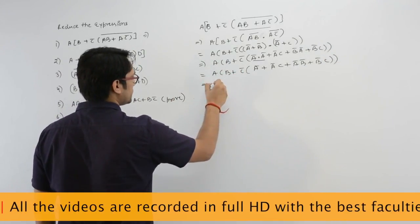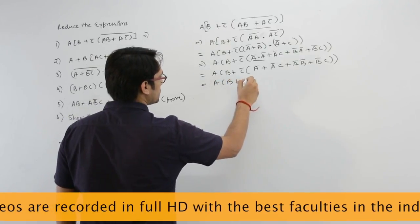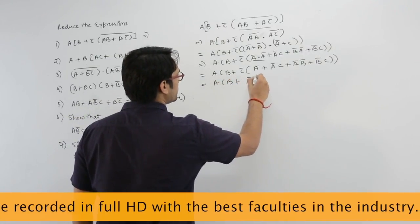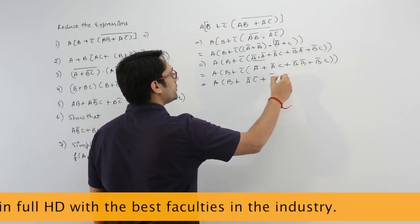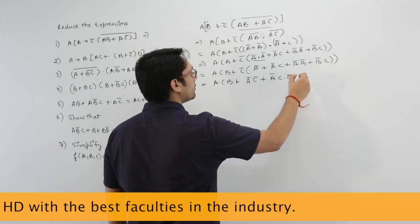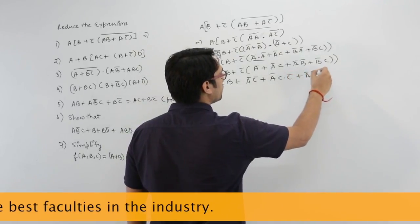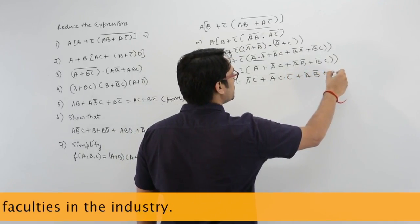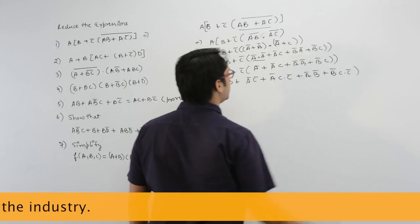Now expand this. It is b plus a'·c' plus a'c·c' plus a'b' plus b'c·c'.